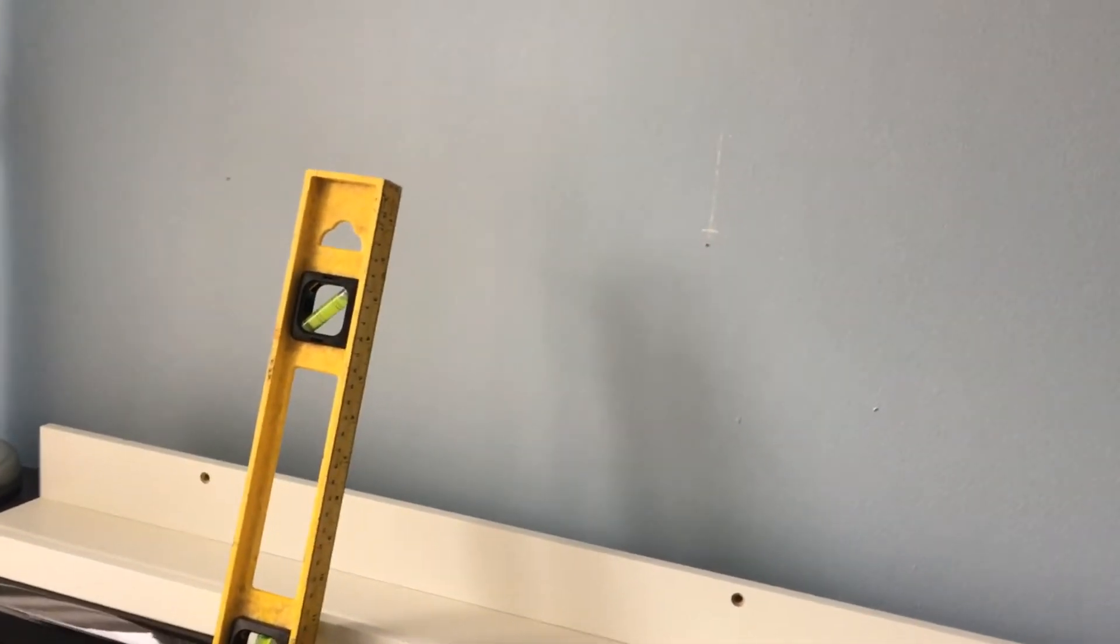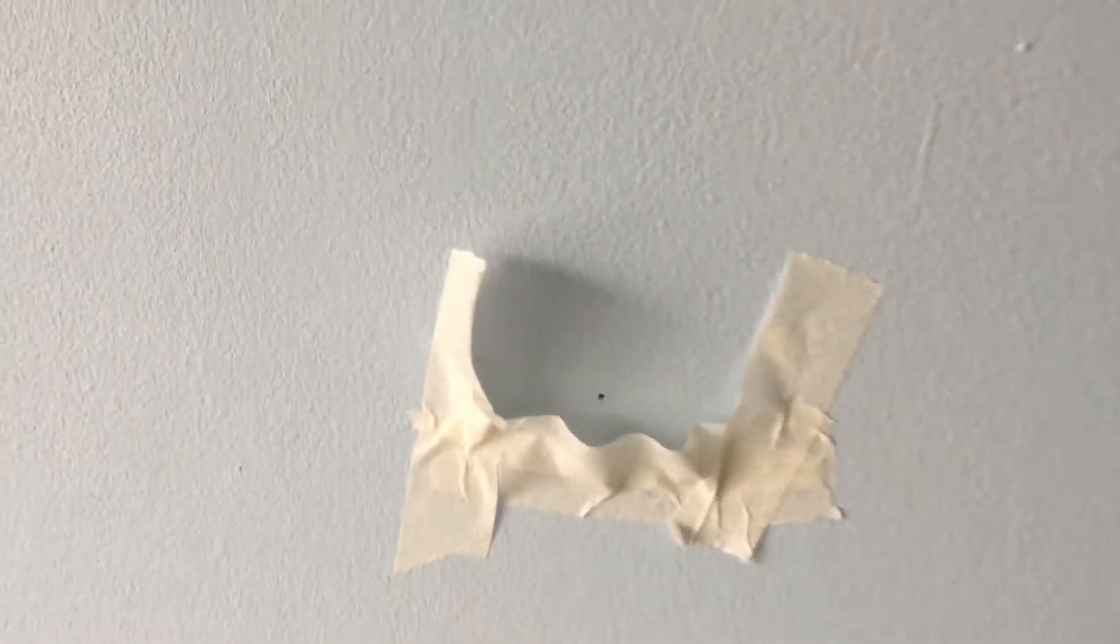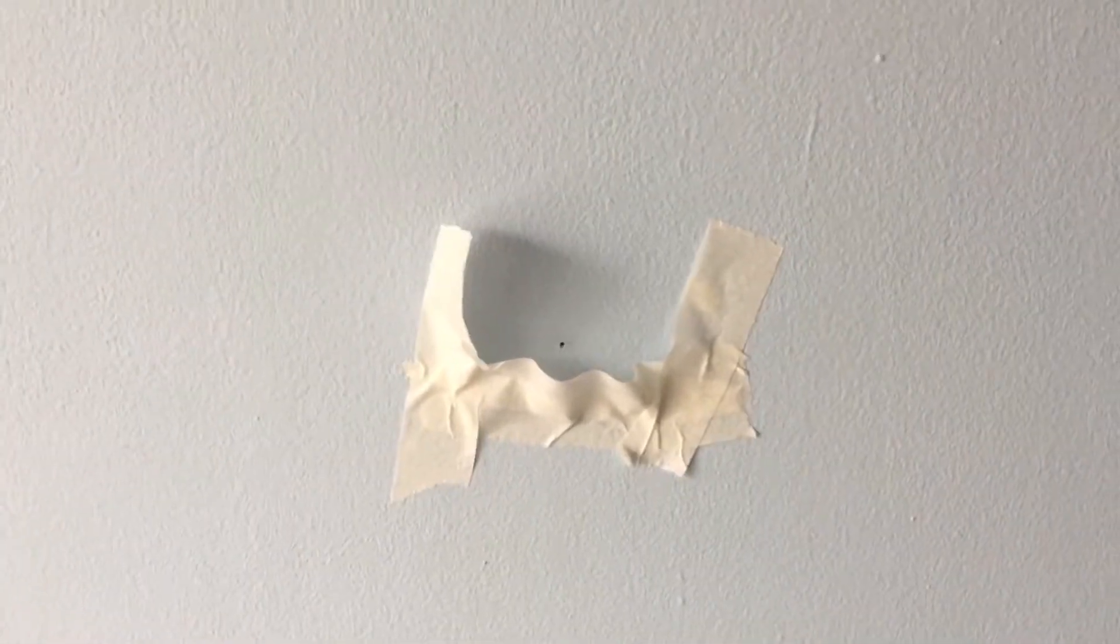I've already marked the three places where I'm going to drill using the leveler. It's a long item, so we would like to have it in one level of course. And now I'm using some painters tape and I'm just sticking it on the wall right on the place where I will be drilling.